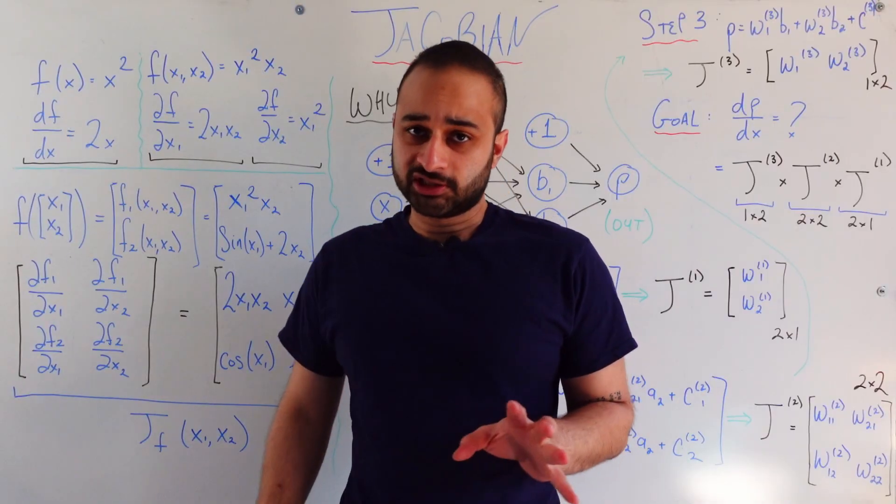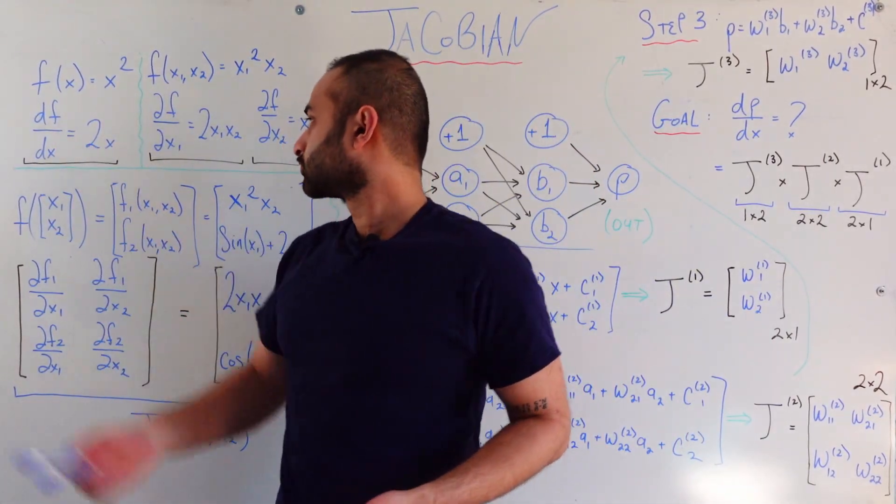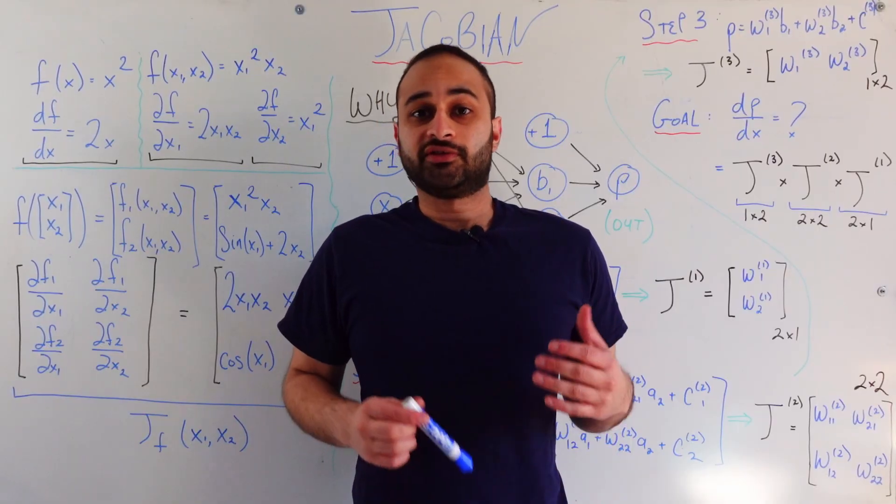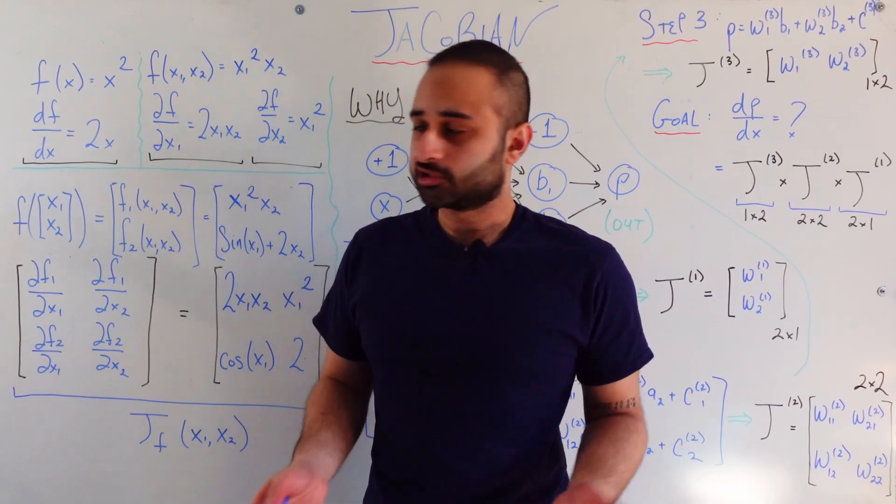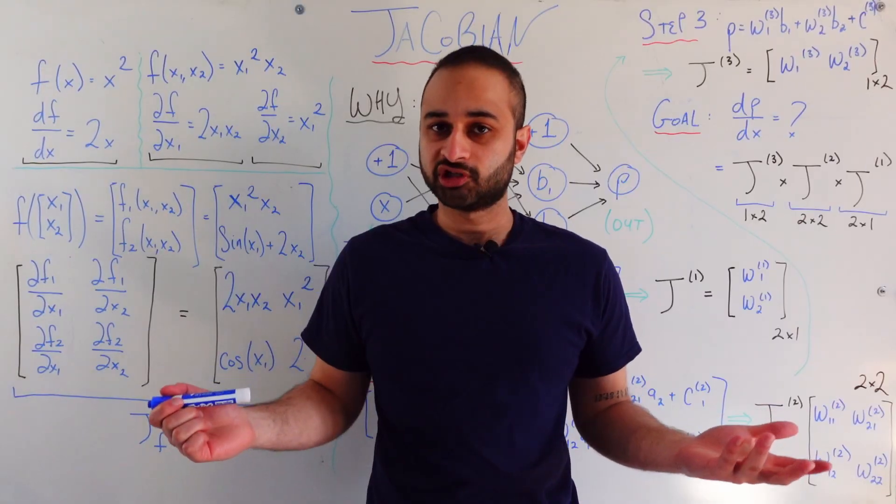Let's start really easy with a function of one variable. We have f of x equals x squared. If I asked you to take the derivative of this, it should be pretty simple. We just do df dx equals 2x. Pretty simple.